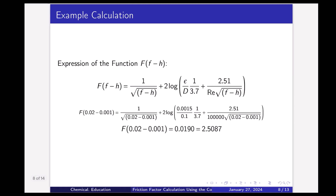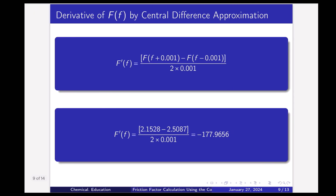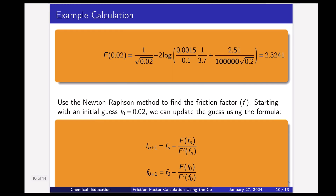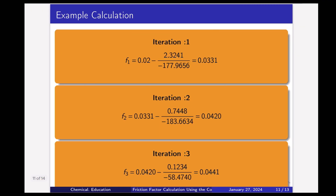Similarly, F(0.02 − 0.001) gives another value. Putting all parameter values together, the derivative F′(f₀) = −177.9656. We also calculate F(f₀) and then apply the Newton-Raphson update. So f₁ = f₀ − F(f₀)/F′(f₀) = 0.0331.